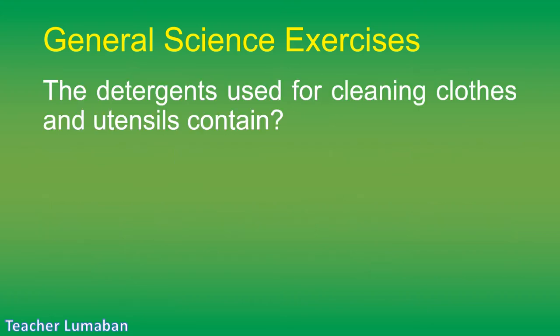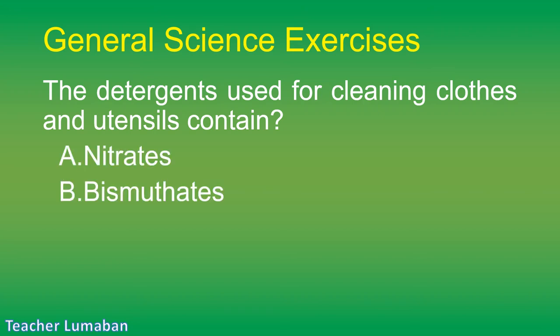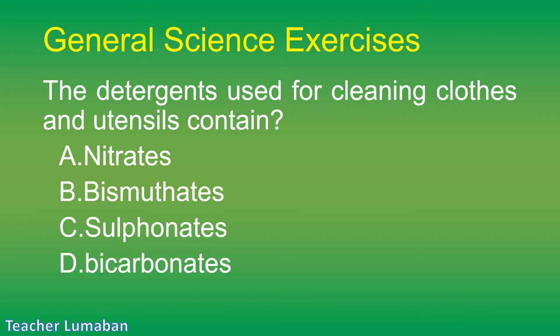The detergents used for cleaning clothes and utensils contain: Letter A: nitrates. Letter B: bismuthates. Letter C: sulfonates. Letter D: bicarbonates.